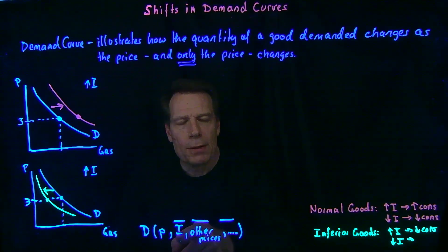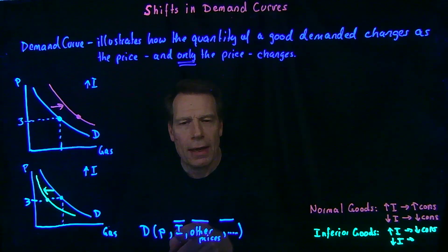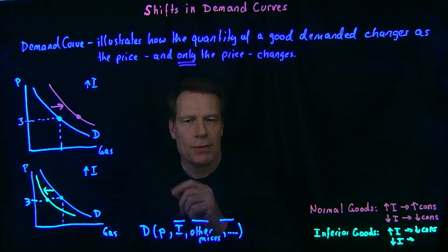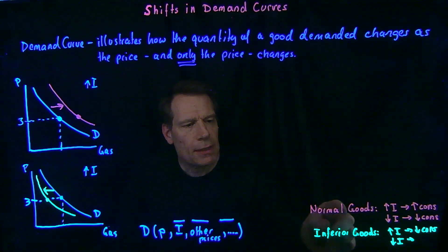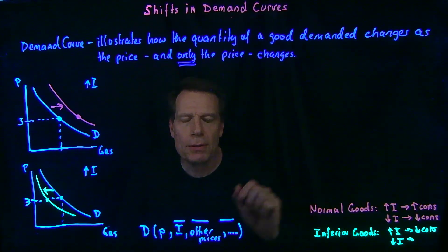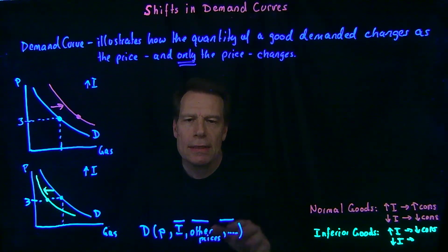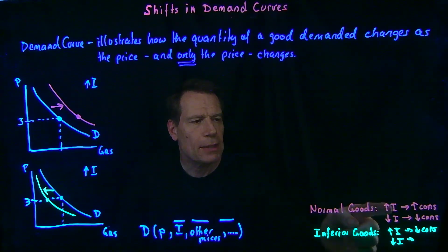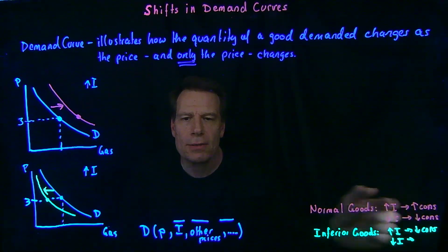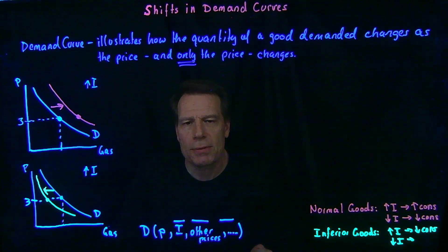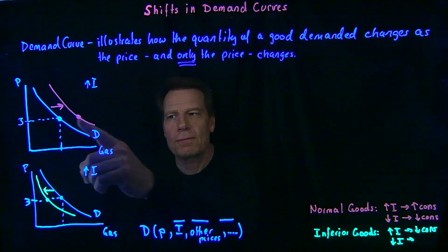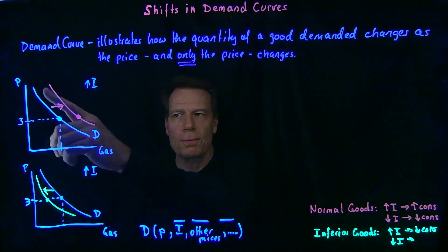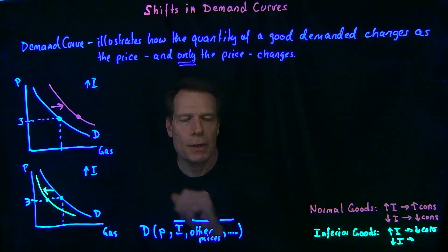We can think about what happens to the demand curve as income changes. We could even consider an in-between good that's neither normal nor inferior — the kind of good where if income increases, there's no change in consumption. In that case, the demand curve wouldn't shift right or left; it would just stay where it was.